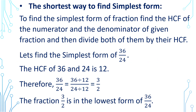I will now explain the shortest way to find the simplest form. To find the simplest form of a fraction, find the HCF of the numerator and the denominator of the given fraction, and then divide them both by their HCF. For example, let us find the simplest form of 36 by 24. The HCF of 36 and 24 is 12. Therefore, dividing 36 and 24 by 12, we get the answer 3 by 2. So the fraction 3 by 2 is the lowest form of 36 by 24.